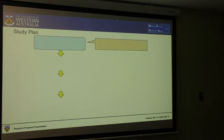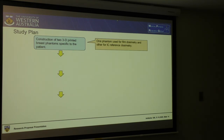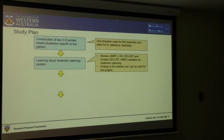To sum all that up, this is my study plan. First, I need to construct 3D printed breast phantoms — two phantoms per patient, since it's specific to the patient. One will use the ionization chamber and the other will have films inserted in it. Then, I need to learn about the treatment planning system. We have three at Sir Charles Gairdner Hospital: Monaco, XIO, and Eclipse. We're likely to use Eclipse because it's newer and easier.